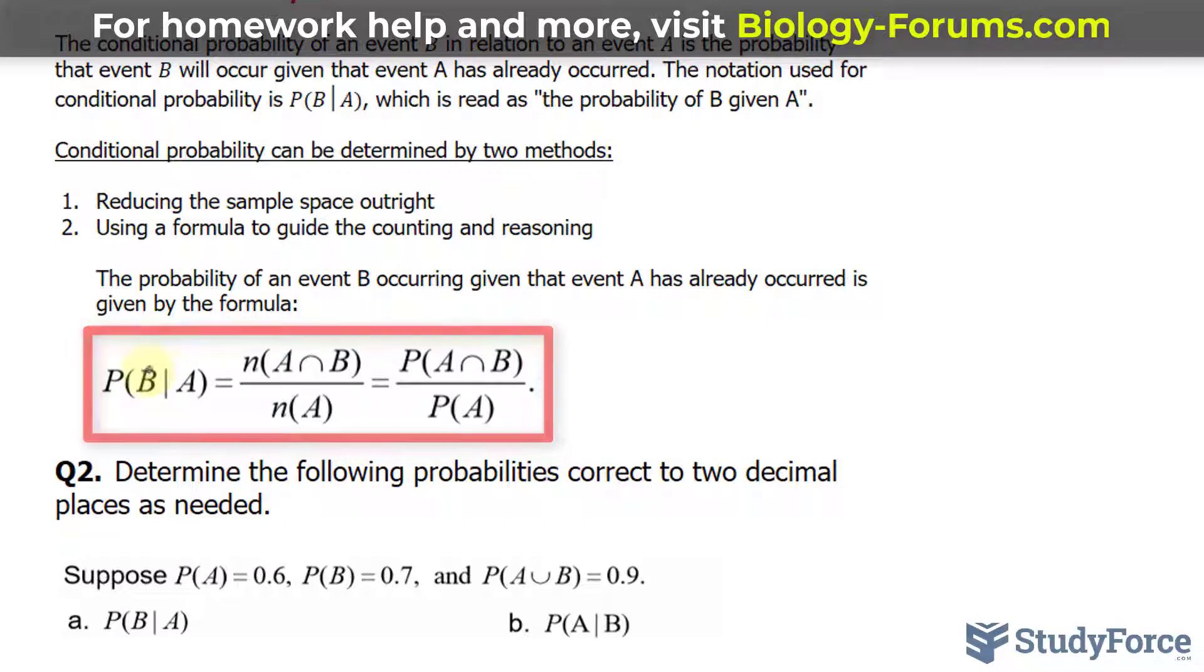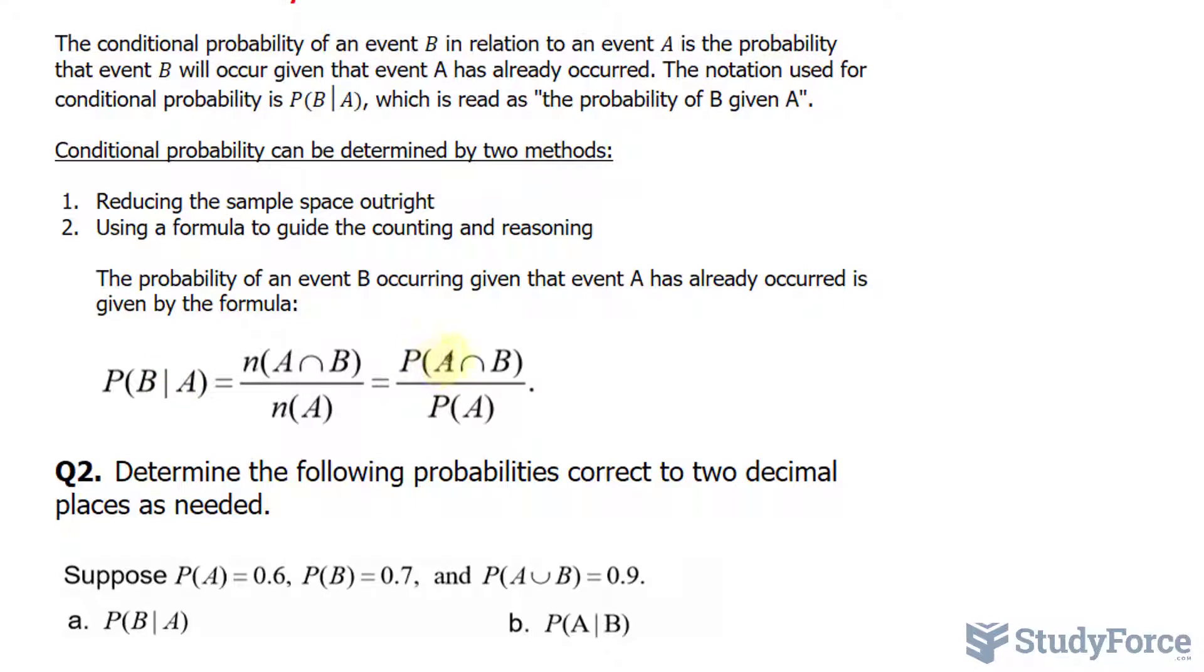To find the probability of B given that you chose A, take the probability of the intersection of A and B divided by the probability of A.